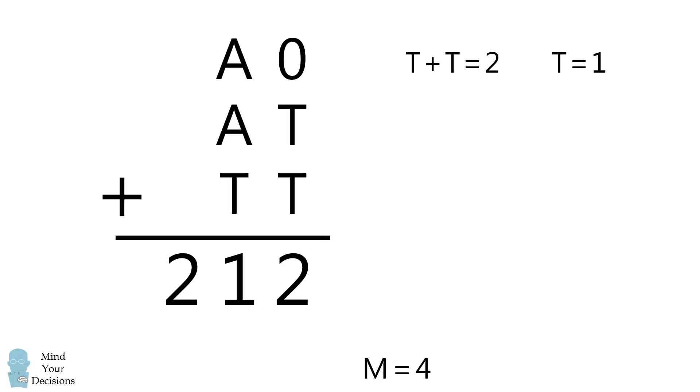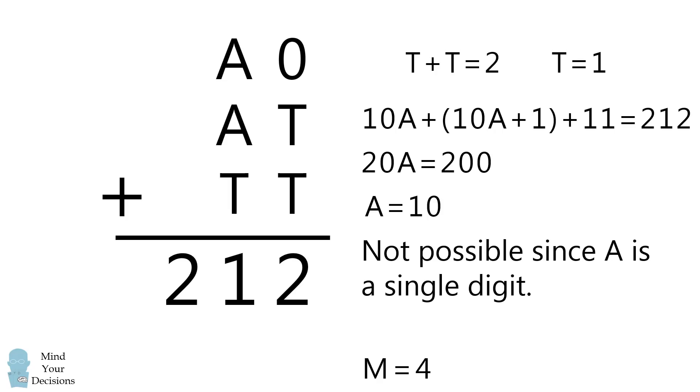Which then means the entire problem has to be 10A plus 10A plus 1 plus 11 is equal to 212. This means 20A equals 200 and A is equal to 10. But that's not possible because A has to be a single digit from 0 to 9.